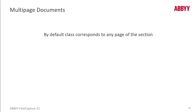Let's see how the classification model operates with multi-page documents. The classifier is applied to each page. A given class can correspond to any page of the section, or specifically the first page of the section. The first page always means the beginning of a new document.